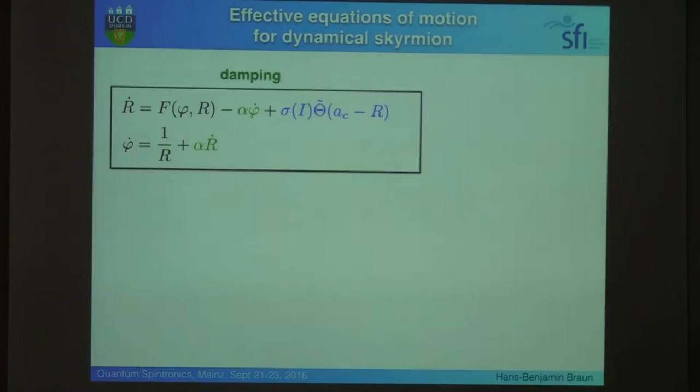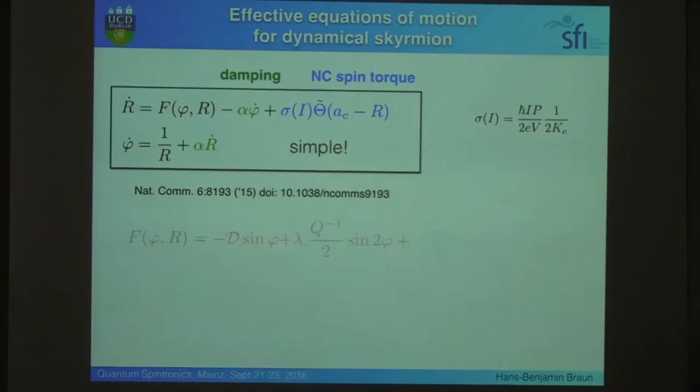And what you actually get is a very simple system of two differential equations, and now this is really simple. So, sigma is the current, F essentially encodes all contributions which violate angular momentum conservation. They could all be zero. So, this is damping, and this is the driving spin current.